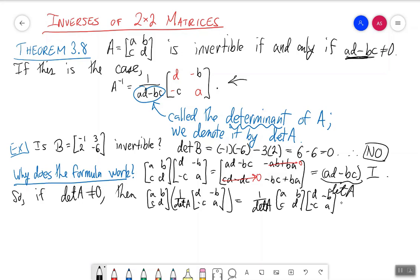Scrunching it a little bit over here, which is equal to 1 over the determinant of A times the determinant of A times I. And these determinants cancel out, and so taking into account theorem 3.6, I conclude that this guy over here is indeed the inverse of the matrix A.